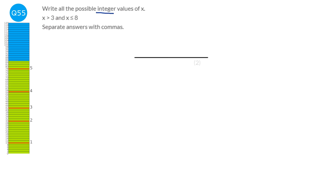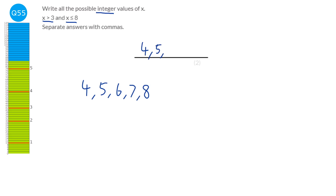Integer just means whole number. We're looking for all whole numbers satisfying two inequalities. The first says greater than 3, so the smallest number is 4. The second says less than or equal to 8 — so we keep going until we hit numbers that satisfy that. 9 is not less than or equal to 8. So our answer is 4, 5, 6, 7 and 8.